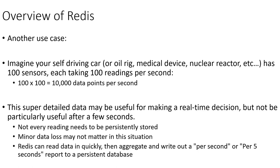If you have a device with 100 sensors each taking 100 readings per second — every 10 milliseconds reading distance, vibrations, speed, heat, carbon monoxide levels, or whatever — that's 10,000 data points per second being generated. Even if each is a small amount of data, that's a lot of transactions that would likely overwhelm many database systems, but it's well within the bounds of what a Redis server can intake.